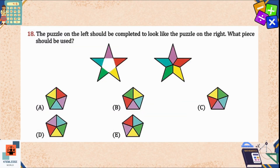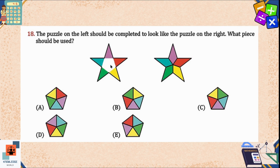Question 18: The puzzle on the left should be completed to look like the puzzle on the right. What piece should be used? We can focus on any two colors — like red and yellow. These two colors are adjacent in the completed puzzle, but in options B and E there is another color between them, so options B and E are incorrect. Now we focus on option A and try to match the red color.